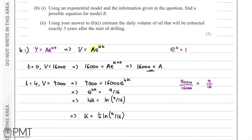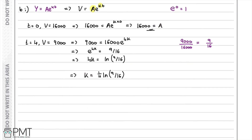We can now write out the full equation for Model B: V equals 16,000 times e to the power of one quarter ln(9/16) multiplied by T. That is the equation of Model B.